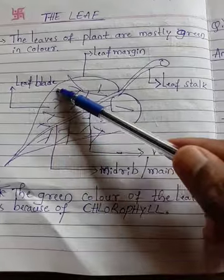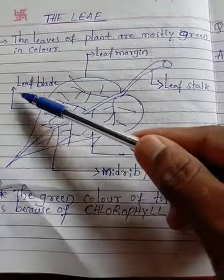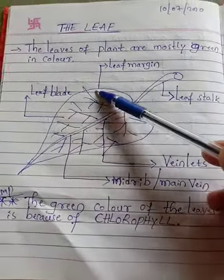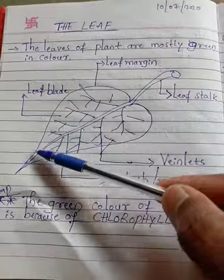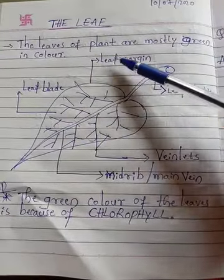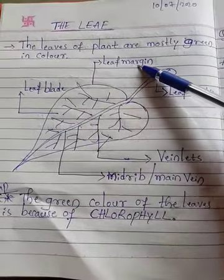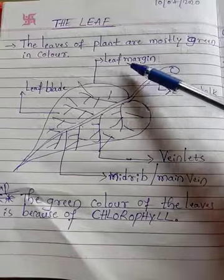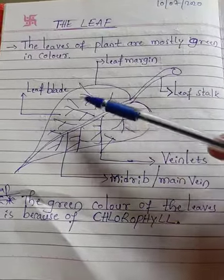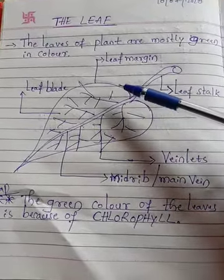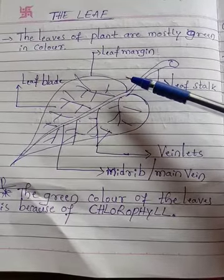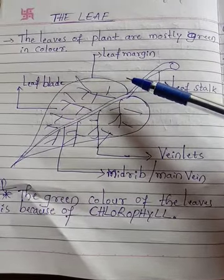This empty space we call the leaf blade, and the edge or margin of this leaf we call the leaf margin. These are the parts of the leaf.